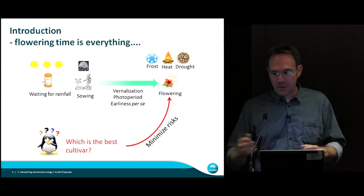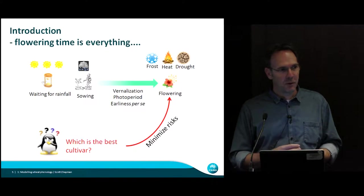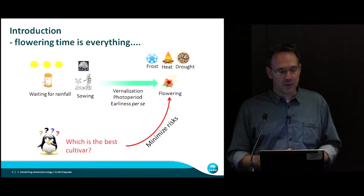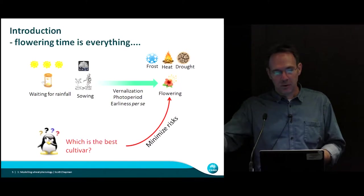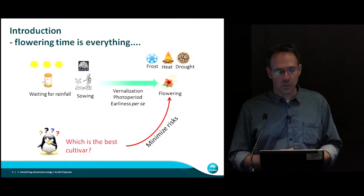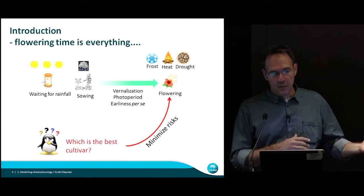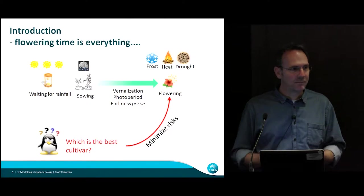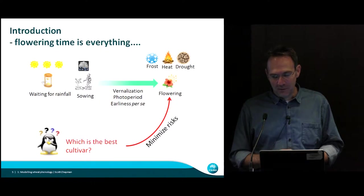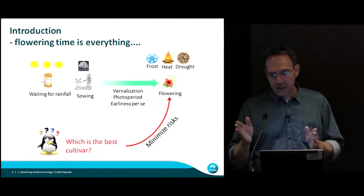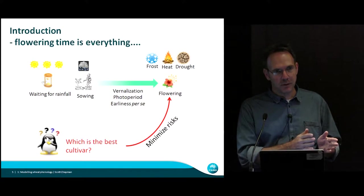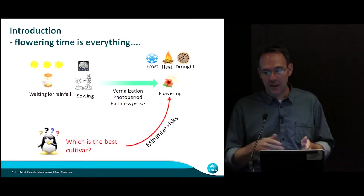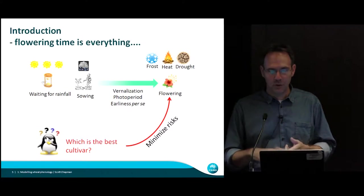In our environments we've got a major challenge: we can't control the sowing date because we've got to wait for rain, and we're not really sure what's going to happen during the season because we're completely rain-fed. In the northern region, wheat production is very much driven by stored soil water — there's not much rain during winter from Dubbo north. In the southern region you get most of your rain during the winter in sporadic amounts, then none after about September. So you've got to avoid the frost, flower late enough to avoid frost, and then heat usually kicks in about three weeks later.